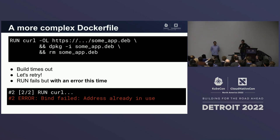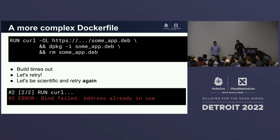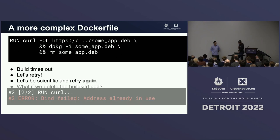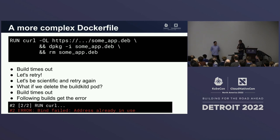We tried again — this time it was consistent, same error: 'address already in use.' So we deleted the BuildKit pod and tried again — the build timed out, back to what we had at the beginning. Trying again, it failed with the same error. So we had a way of reproducing the failures that was reproducible, but didn't make sense yet. We debugged by adding netstat at the beginning and end of the command. With a new BuildKit pod, the first netstat showed no port bound. The second showed the port bound by the app daemon, and the build hung. So package installation was apparently starting a daemon.